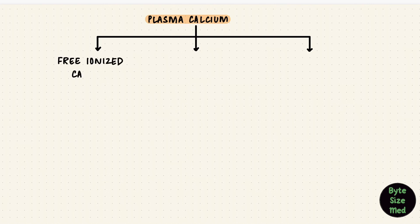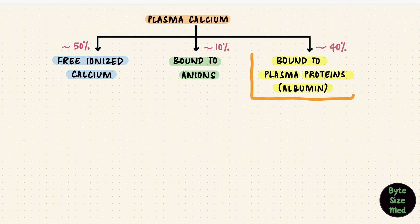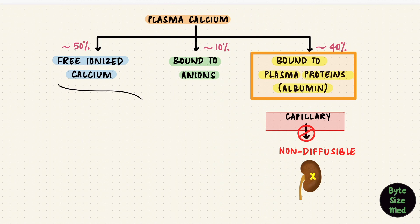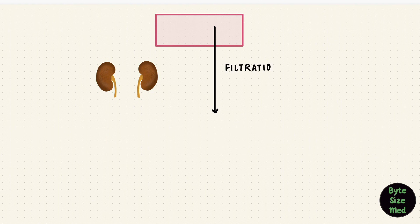In the plasma, calcium is in different forms. Most of it is free ionized calcium, around 50%. The rest is bound, either to anions like phosphate and citrate, or to plasma proteins like albumin — that's 10% and 40%. Those bound to plasma proteins cannot cross the capillary membrane, so are non-diffusable and cannot be filtered by the kidney. The rest can cross capillaries, making them diffusable — they can be filtered by the glomerulus, around 60%. Of that 60%, most, around 99%, gets reabsorbed, leaving only about 1% to be excreted in the urine.